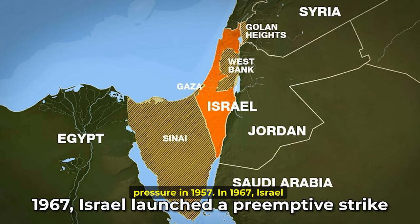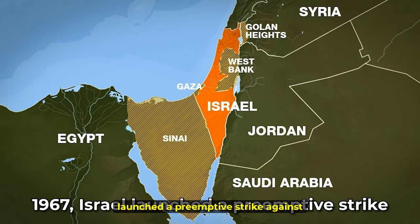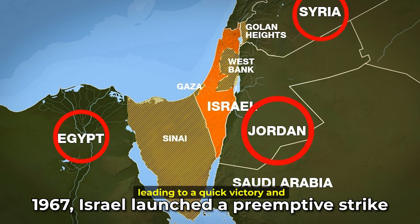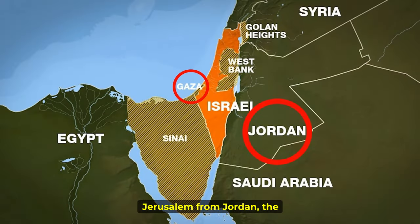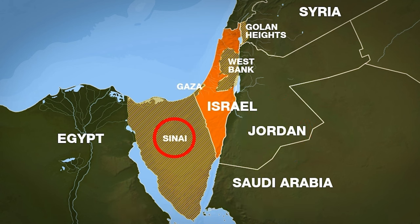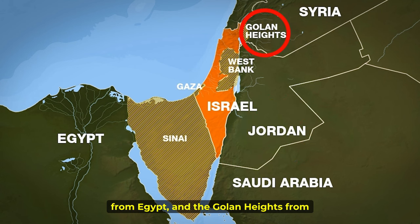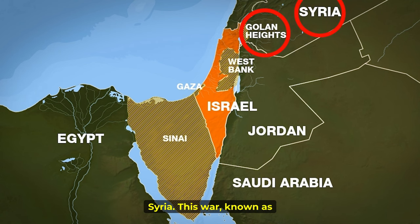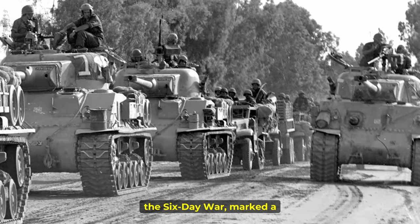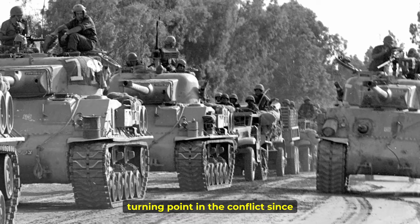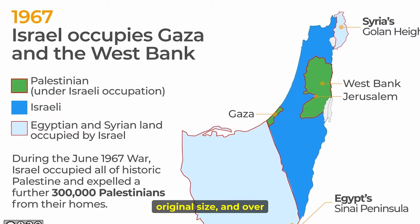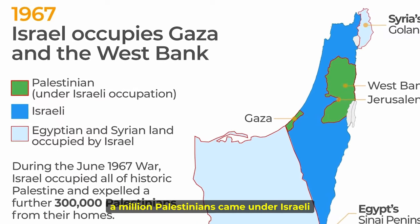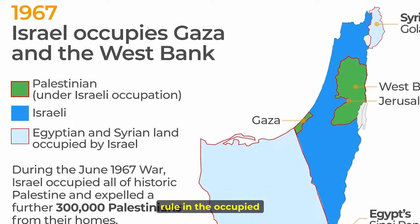In 1967, Israel launched a preemptive strike against Egypt, Syria, and Jordan, leading to a quick victory and occupation of the West Bank and East Jerusalem from Jordan, the Gaza Strip and the Sinai Peninsula from Egypt, and the Golan Heights from Syria. This war, known as the Six-Day War, marked a turning point in the conflict since Israel gained territory four times its original size, and over a million Palestinians came under Israeli rule in the occupied regions.